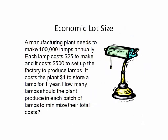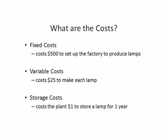How many items should be manufactured in batches to minimize the total cost of production? In this case, we are manufacturing 100,000 lamps annually. There are several costs to consider. There is a fixed cost of $500 to set up the factory to produce a batch of lamps. Each lamp costs $25 to make and $1 to store for a year.